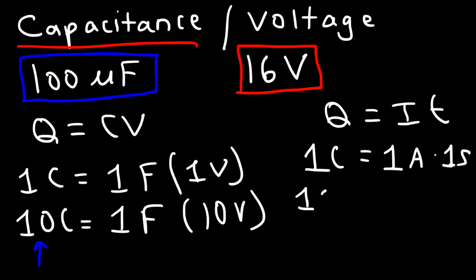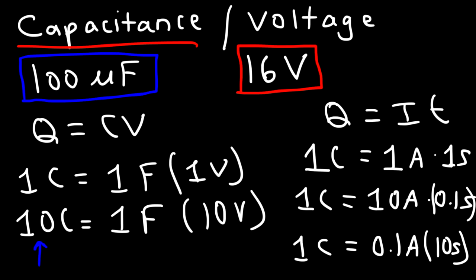Now that same capacitor can emit 10 amps of current in 0.1 seconds. So it can emit a large amount of current in a very short time or a small amount of current for a longer period of time. A capacitor that has one coulomb of charge stored in it can give out 0.1 amps which is 100 milliamps of current for a period of 10 seconds.